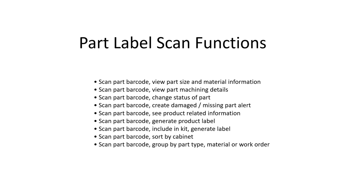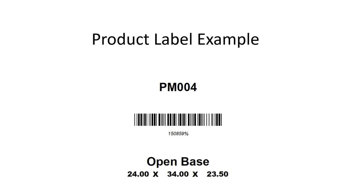Here's an example of a product label. You could scan a part label and it generates the product label for you. We can see basic information — this isn't trying to be the most perfect product label, but it gives a unique ID for a particular cabinet named 'open base,' sized 24 by 34 by 23.5, belonging to work order PM004. Because the part barcode scan auto-generates the product label, you could scan it after assembly to stage the work or prepare for shipping.